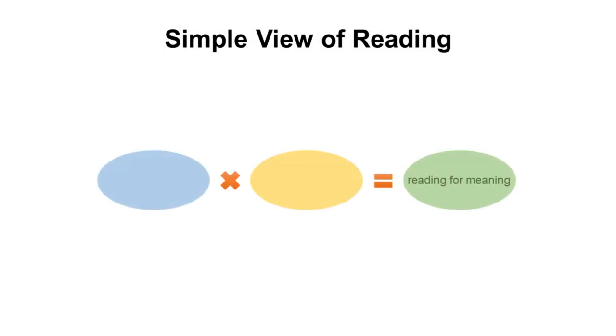The simple view of reading, focused on reading comprehension, tells us that in order to be a good comprehender, you need both word recognition and language comprehension. So instead of focusing only on learning to read — which is the word recognition part, the very beginning — to really become a proficient reader, you're reading to learn, doing that with two things: word recognition and language comprehension.